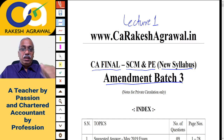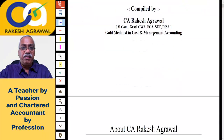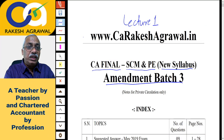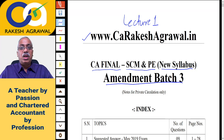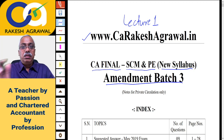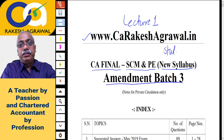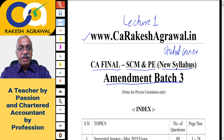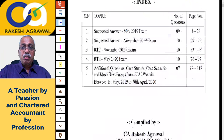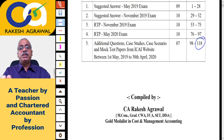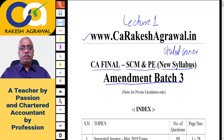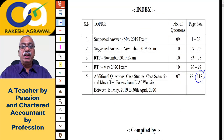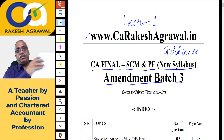Whatever I am going to discuss here is in this PDF file. This PDF file is available on the website www.carrakeshagrawal.in. You have to first visit this website, go to the section called 'Student Corner,' and from there you can download this Amendment Batch 3 PDF file. Take the printout and get it spiral-bound — it's around 118 pages of notes plus a few extra pages like index and preface, so about 121 pages total.